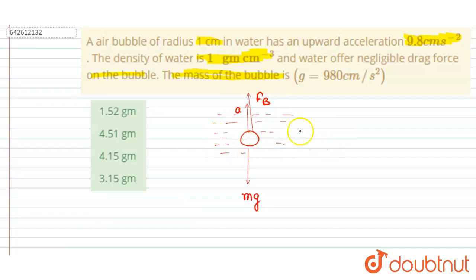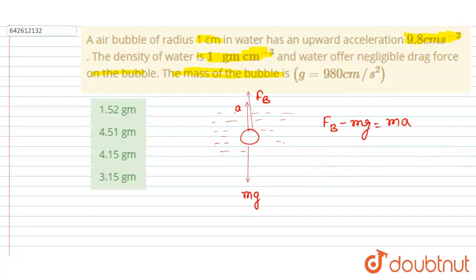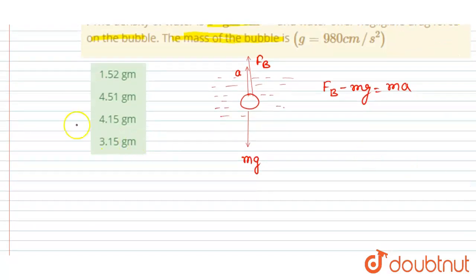And it is having an acceleration a in upward direction, it is given in the question. So now you can see net force in the upward direction is buoyant force minus mg and it is equal to mass times acceleration.